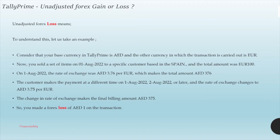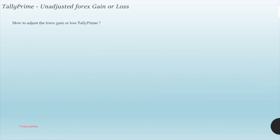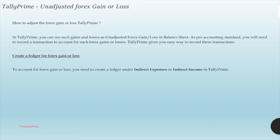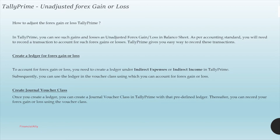Now let me explain what we need to do to adjust these transactions in Tally Prime. We have to adjust this unadjusted forex gain or loss which is displaying in our balance sheet and trial balances. We need to transfer it to our expenses or income. To do this we have to create a ledger called 'Unadjusted Forex Gain or Loss' under indirect expenses or income, then create a voucher class or voucher type for these transactions, enable the unadjusted forex gain or loss option, and post the transaction to transfer the gain or loss to the appropriate ledger.